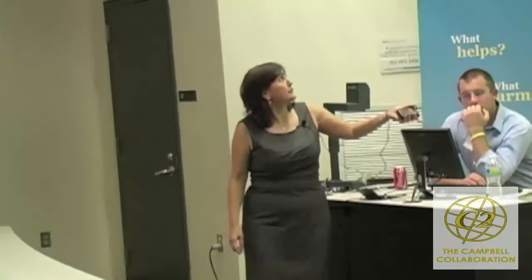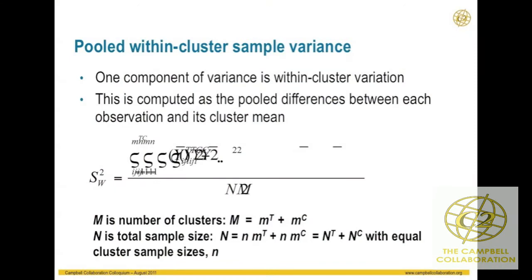There are three different components of variation in a clustered trial. If you're familiar with hierarchical linear models, these are the same variances we talk about in HLMs. Our first component of variance is the within-cluster variance — the within-school or within-clinic variation. We calculate it as the pooled differences between each observation and its cluster mean.